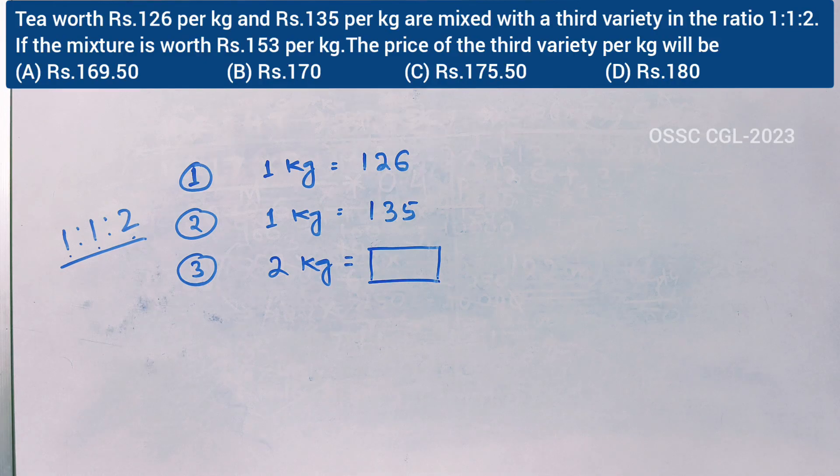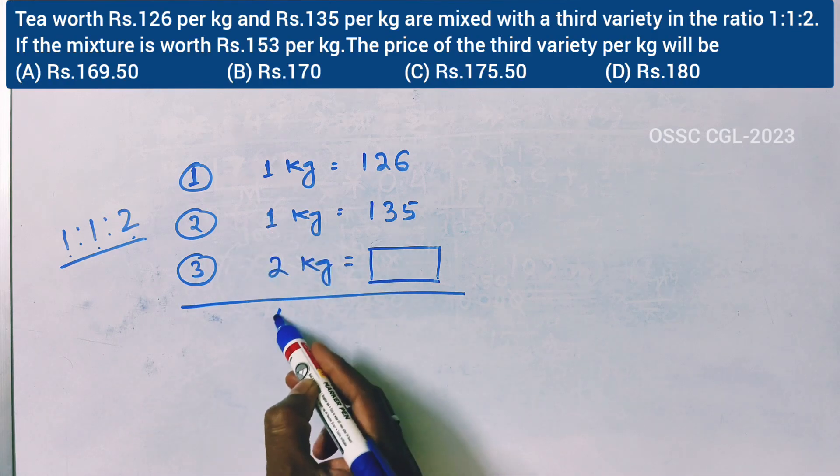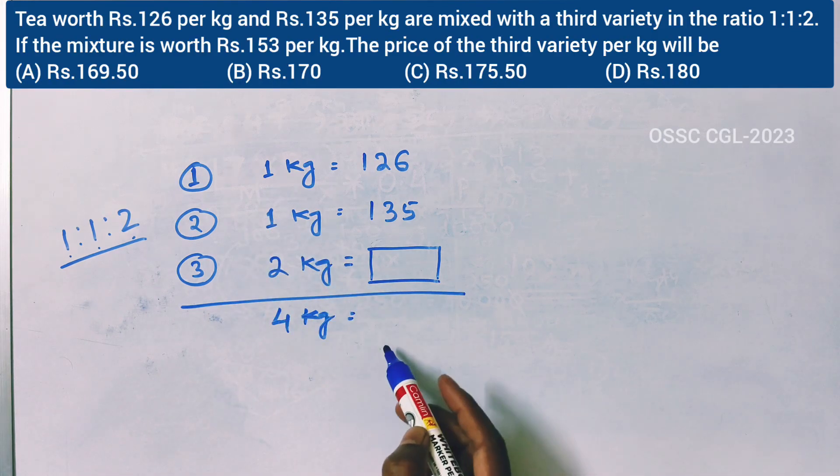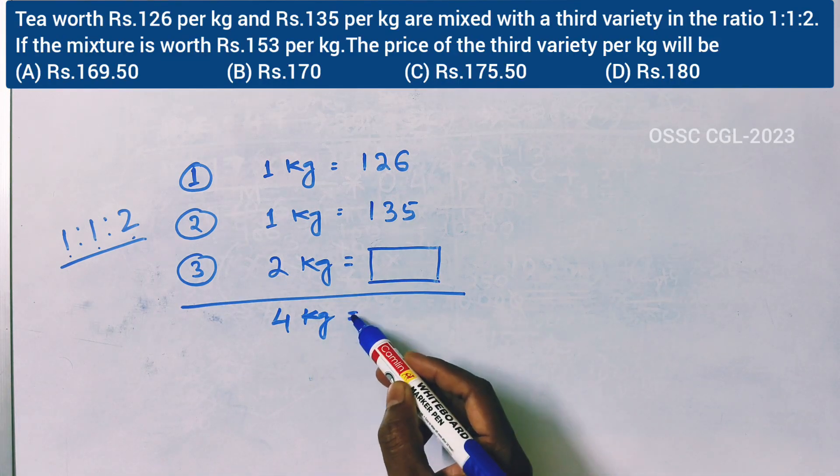Total quantity is 4 kg (1+1+2). The mixture is worth Rs. 153 per kg.